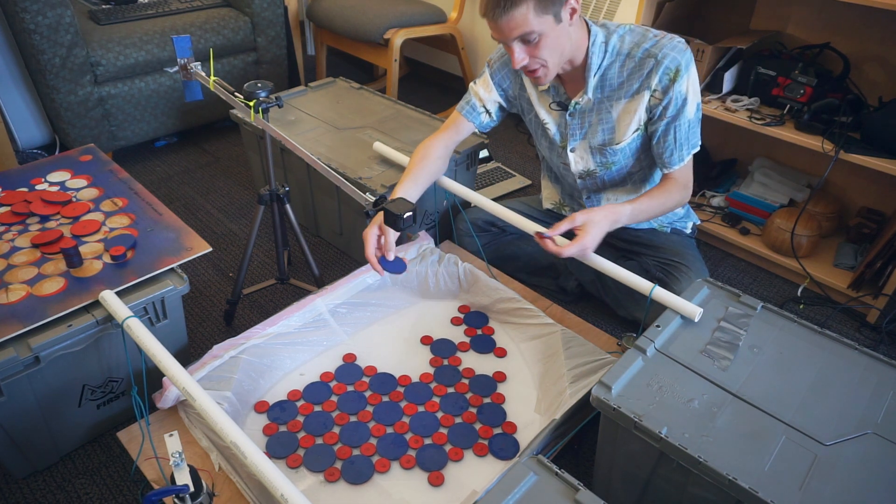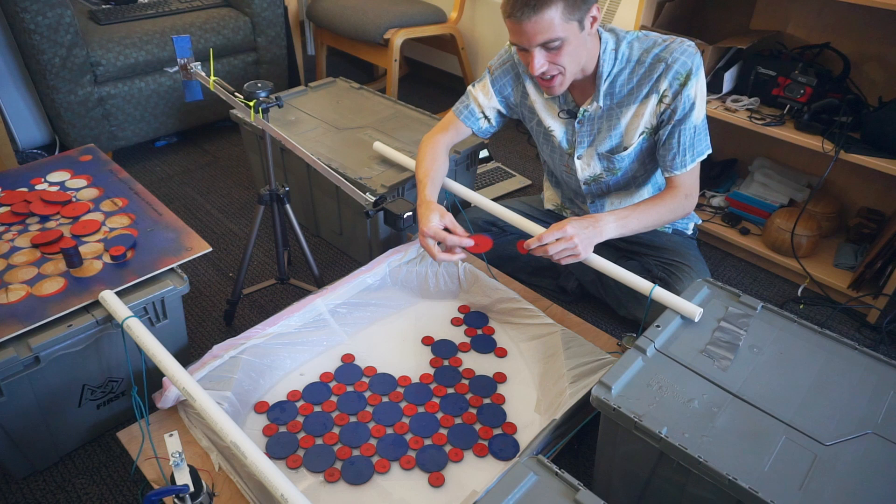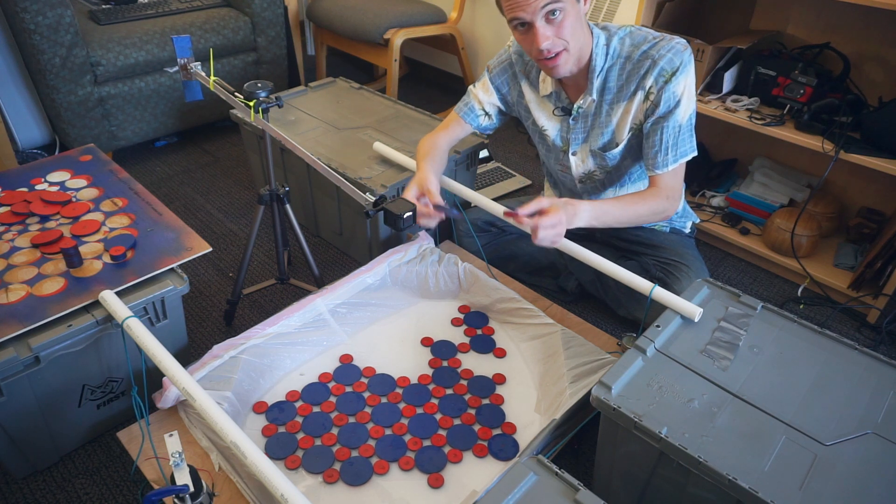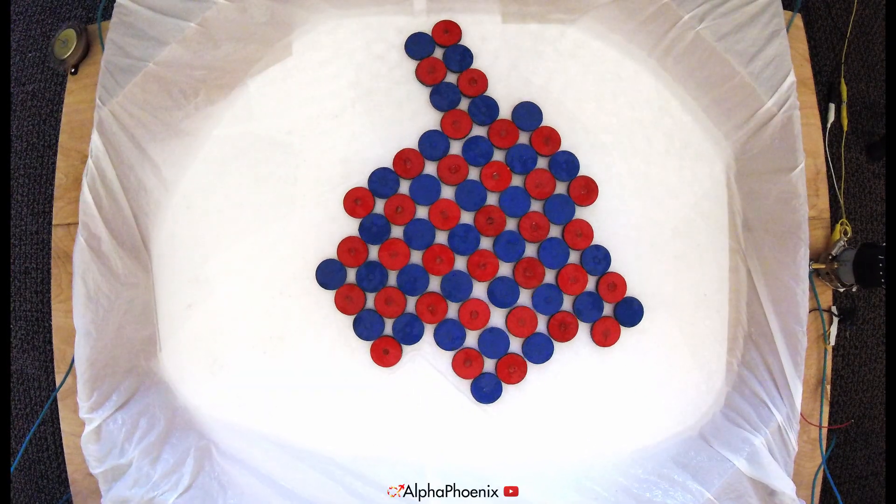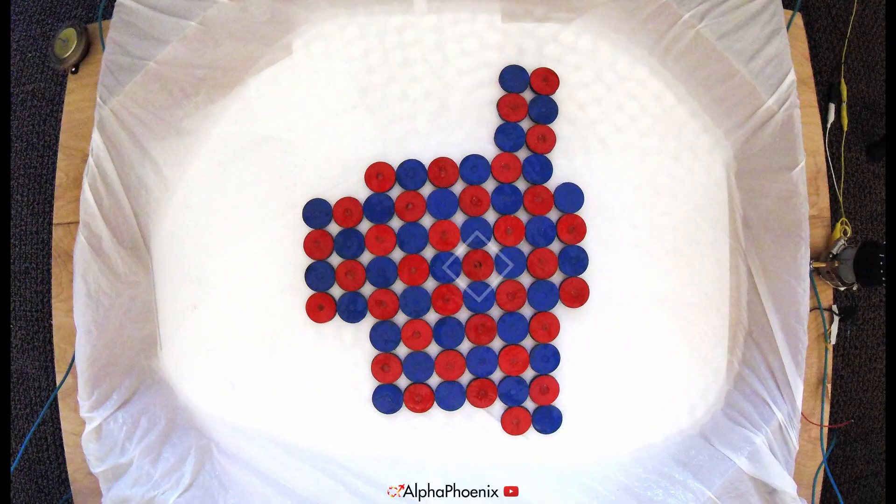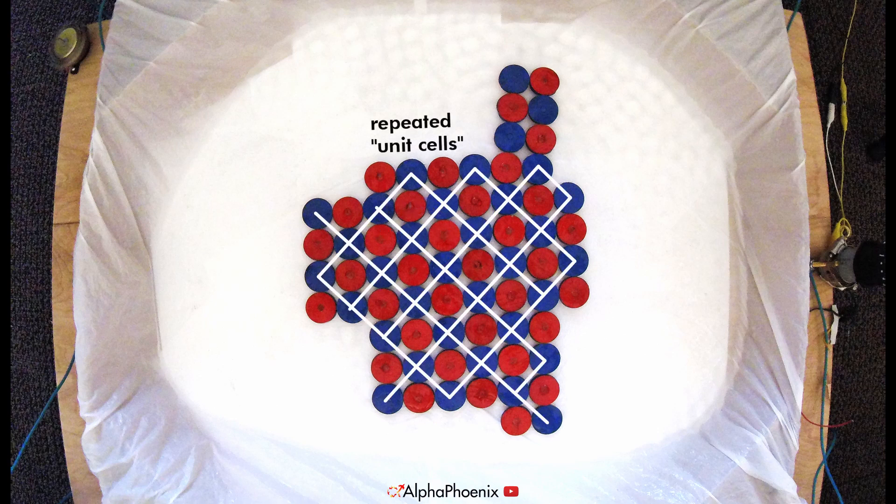In this case, the pattern formed by these discs floating in water is governed by the relative sizes of the red and blue discs. The relative sizes of the discs control how many discs can fit around each other. Then that local arrangement is repeated to form the whole crystal structure. If the discs are the same size, it's easy to fit four blues around a red.